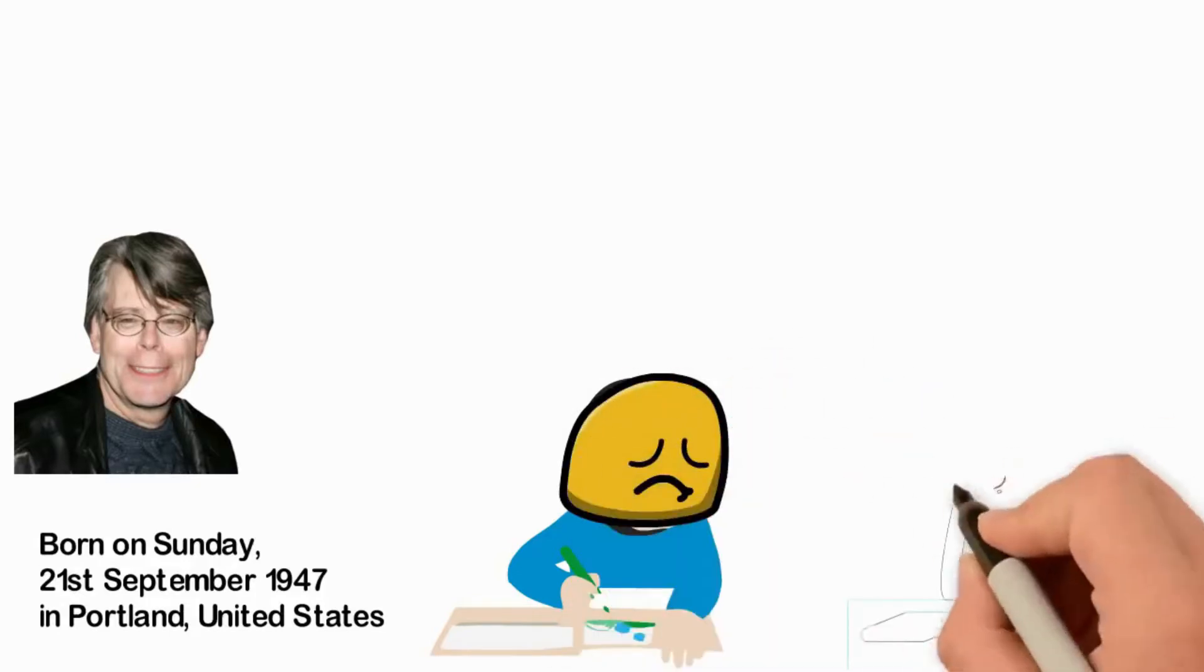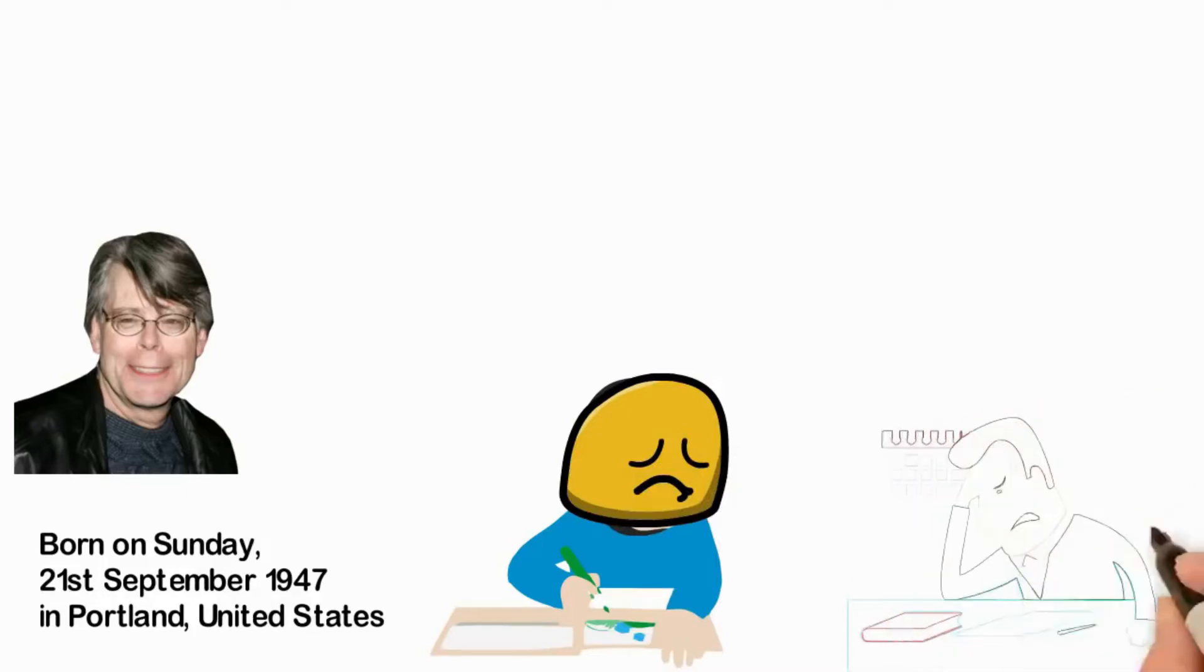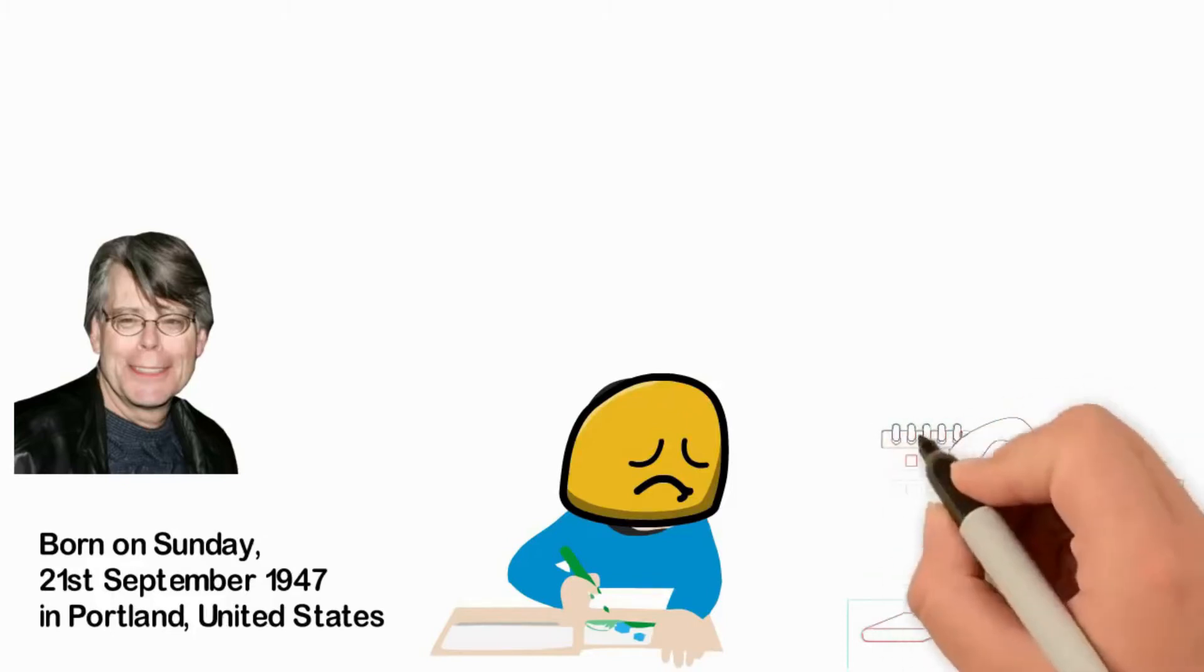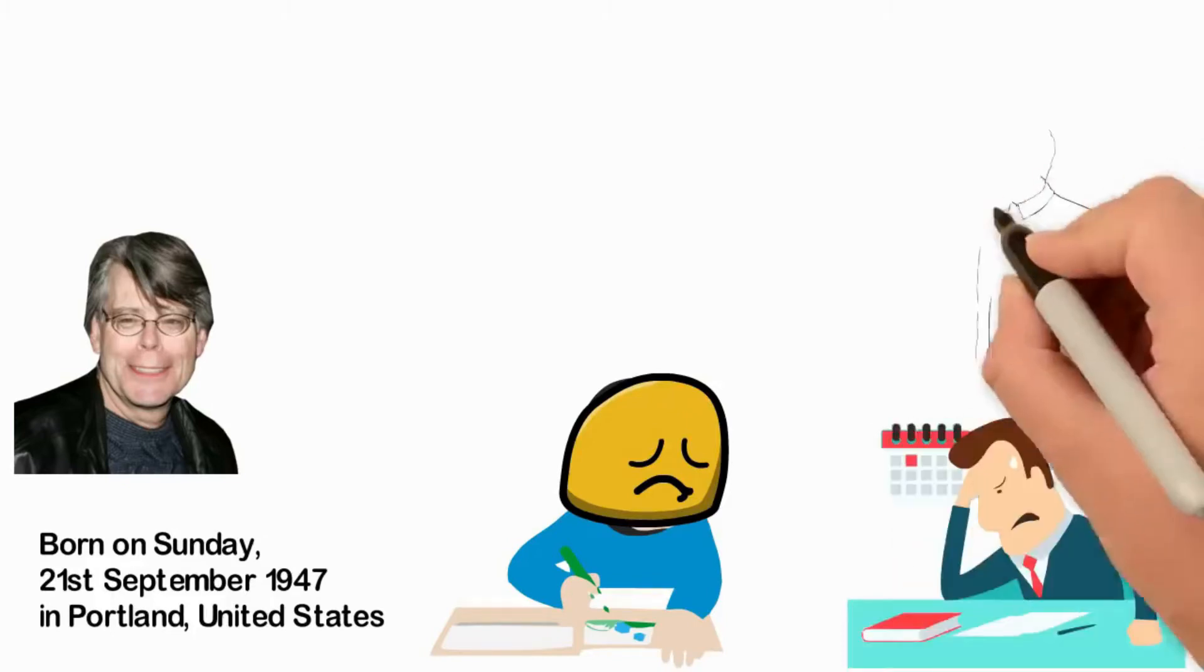One night, Edward started another work. It is a story about a young girl he called Carietta. He wrote the story in the middle of the night and when he woke up in the morning, he thought that the story wasn't good enough.